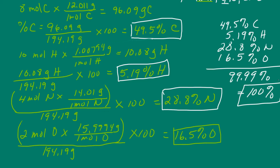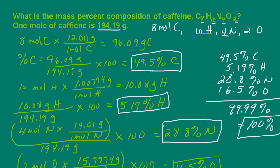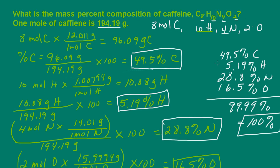So the composition of caffeine by mass percent is 49.5 percent carbon, 5.19 percent hydrogen, 28.8 percent nitrogen, and 16.5 percent oxygen. Remember, the important concept here is you're being asked for mass percent. So the moles have to be converted to mass so that you can divide the mass of each one of the elements by the mass of the compound.